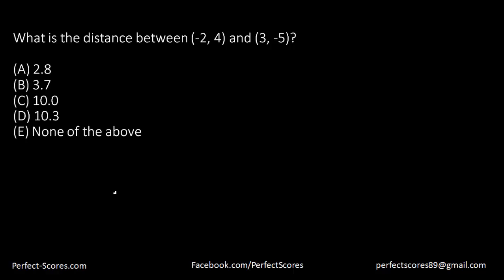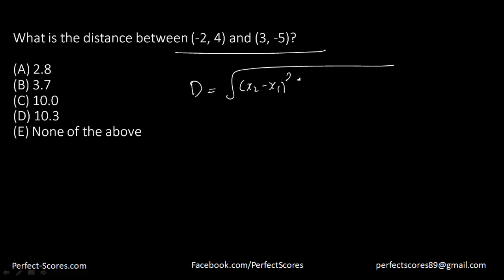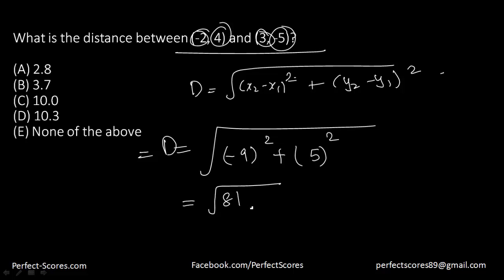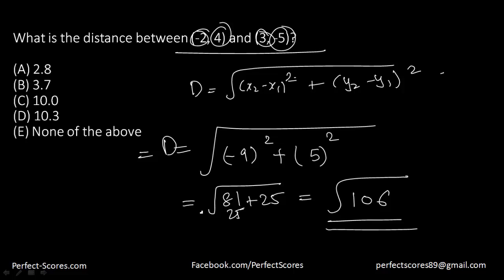The next question asks for the distance between two points. Using the distance formula: square root of (x2 minus x1) squared plus (y2 minus y1) squared. Here that gives square root of negative 9 squared plus 5 squared, which is square root of 81 plus 25 equals square root of 106. Square root of 106 is approximately 10.3. You can use your calculator to find the exact answer.